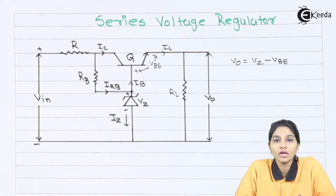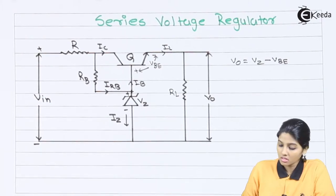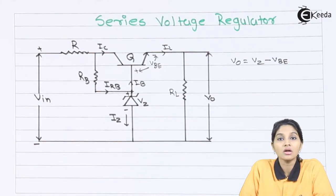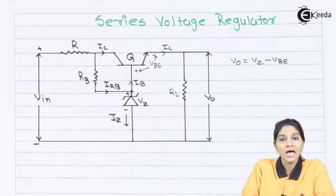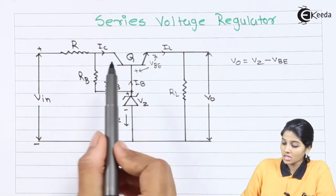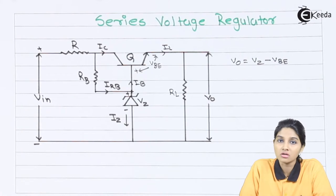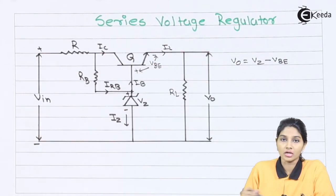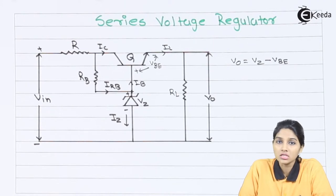Basically the emitter follower regulator is considered as an example of a series voltage regulator. In the circuit, the input voltage is the unregulated DC voltage obtained from a combination of rectifier and filter. Transistor Q acts as a control element. It is connected in series with the load resistance RL, and therefore the circuit is called a series voltage regulator. The transistor Q always operates in the active region and is called the series pass transistor.